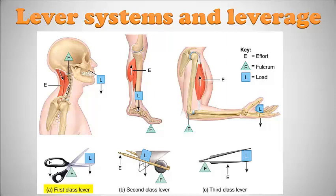In a first class lever, the fulcrum or axis of rotation is located between the effort and the load. An example is a pair of scissors, where the axis of rotation is in the center, the effort is at the handle, and the load is at the blade.